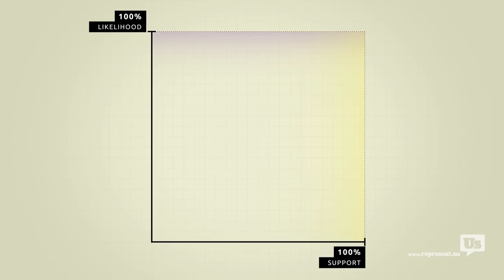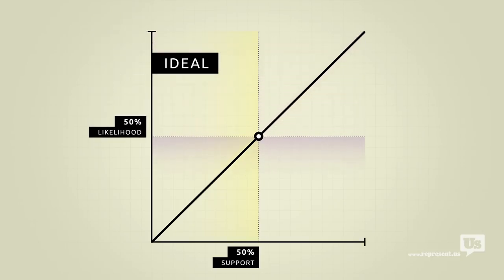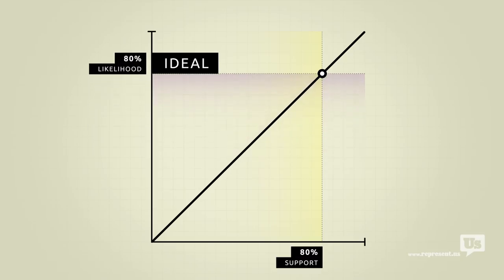On this graph an ideal republic would look like this. If 50% of the public supports an idea there's a 50% chance of it becoming law. If 80% of us support something there's an 80% chance. You get the idea.